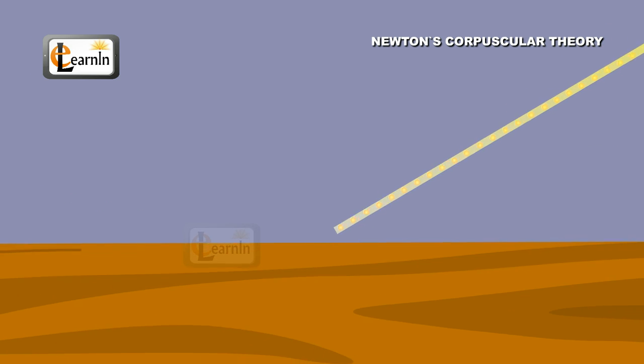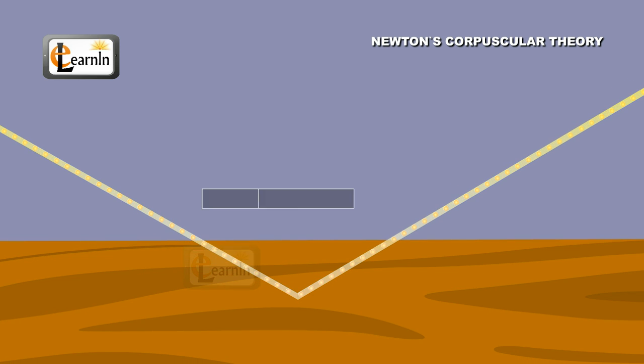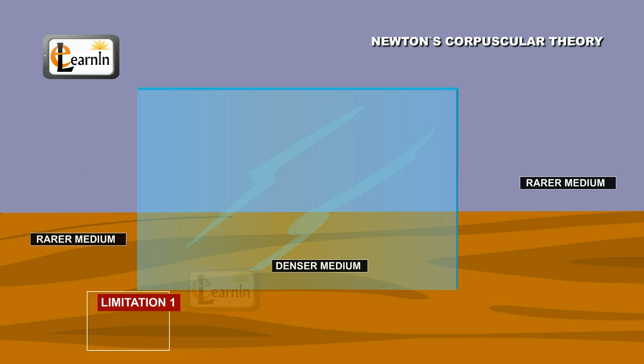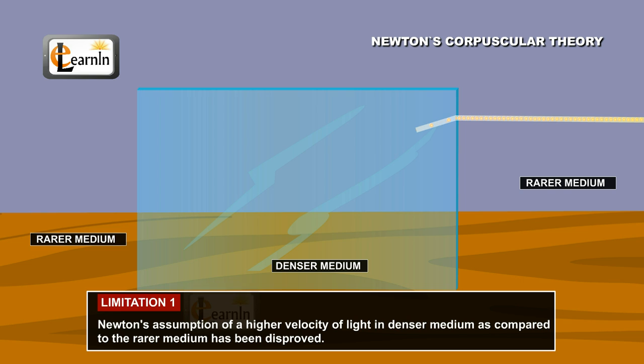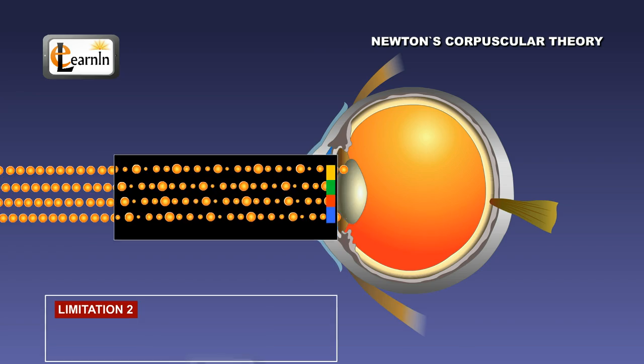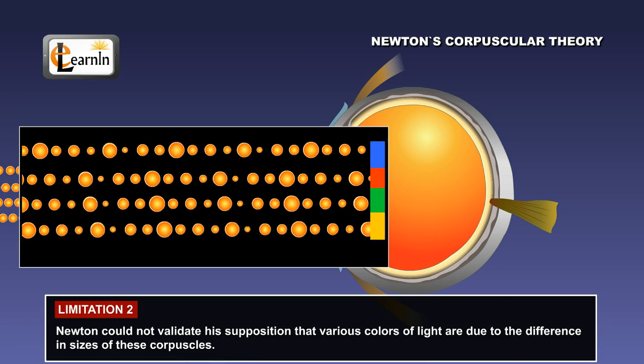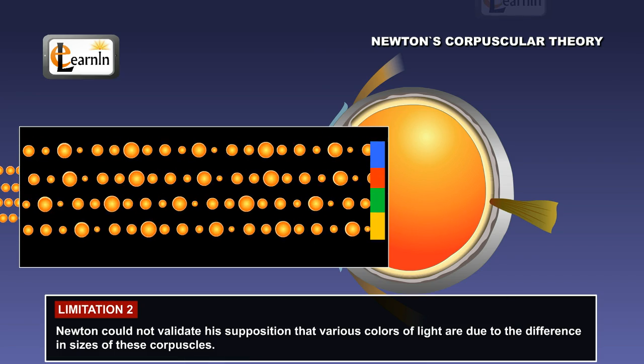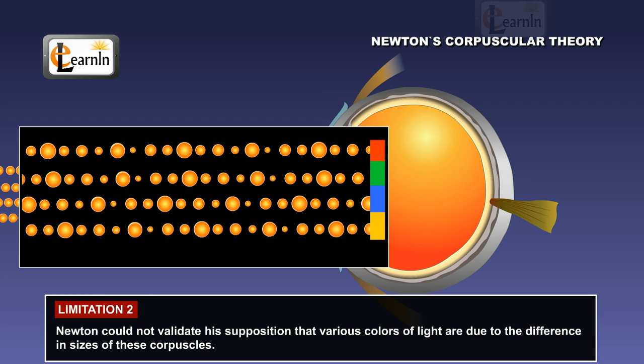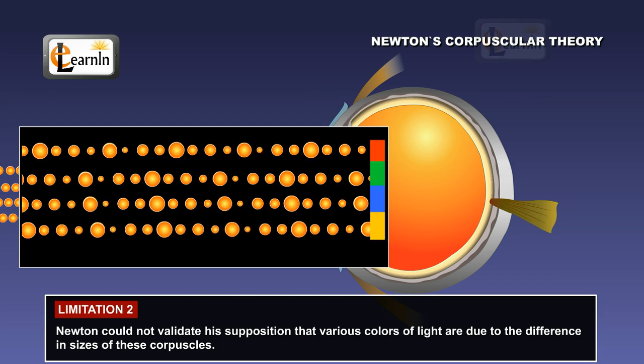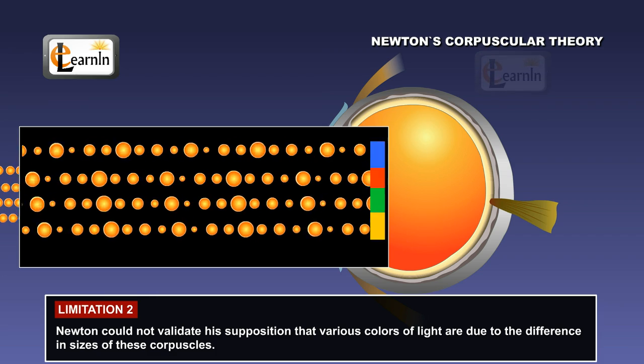Although Newton's corpuscular theory of light could successfully explain the reflection of light, his assumption of higher velocity of light in denser medium as compared to the rarer medium has been disproved. He was also unable to validate his supposition that various colors of light are due to the difference in sizes of these corpuscles. For these reasons, the hypothesis was rendered baseless.